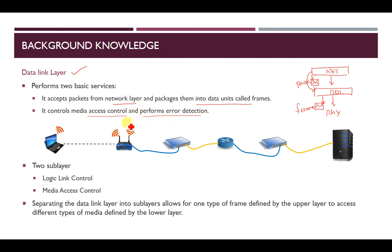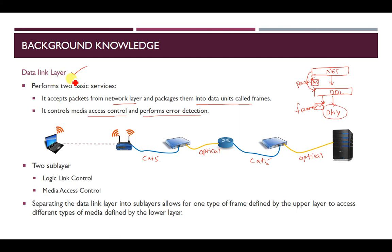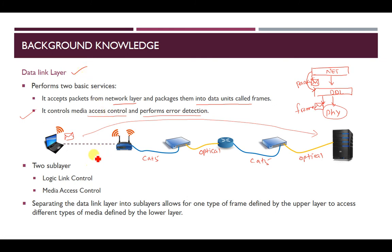Second, it controls media access control and performs error correction. The physical layer involves different types of media — in the network figure, the media includes wireless, CAT5 cable, and optical cable. The carrier or medium is different for each link. The data link layer should be able to access these wires so that data can travel from sender to receiver, which is called media access control. Error detection and correction are also performed by the data link layer.